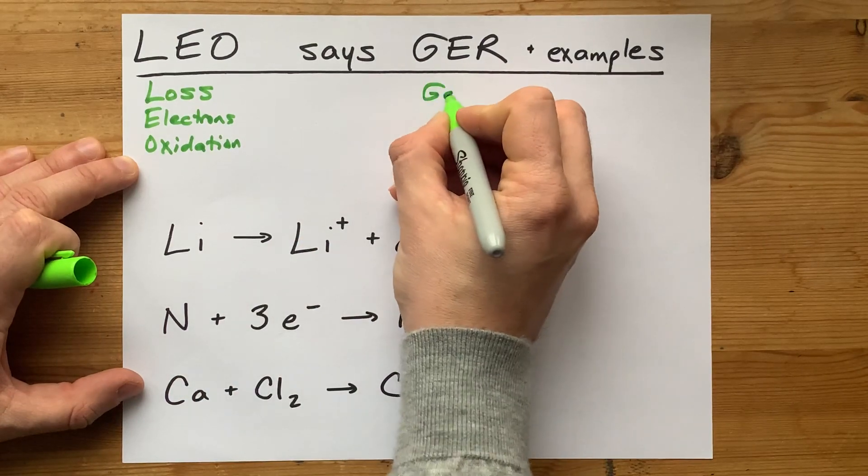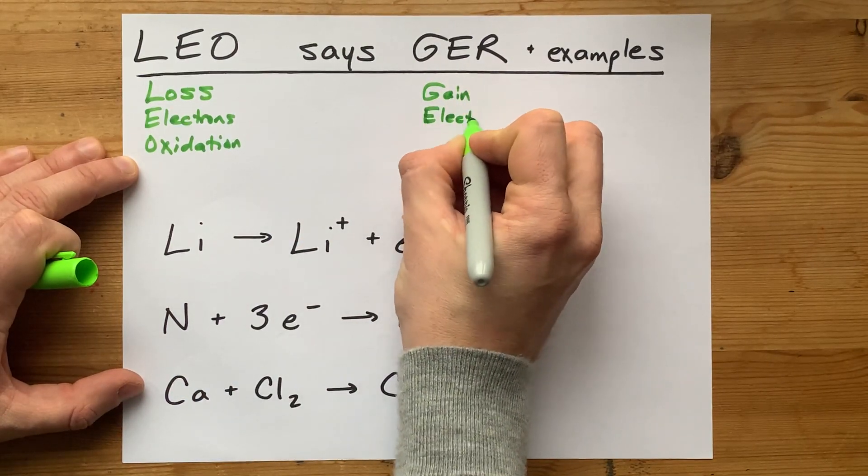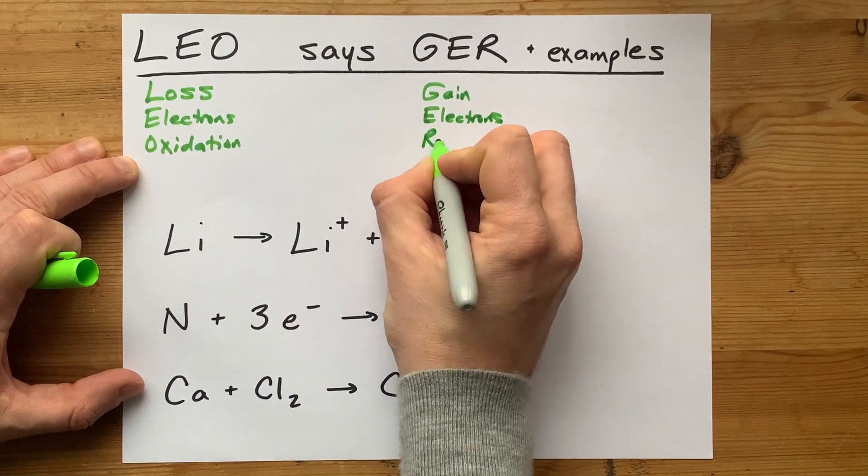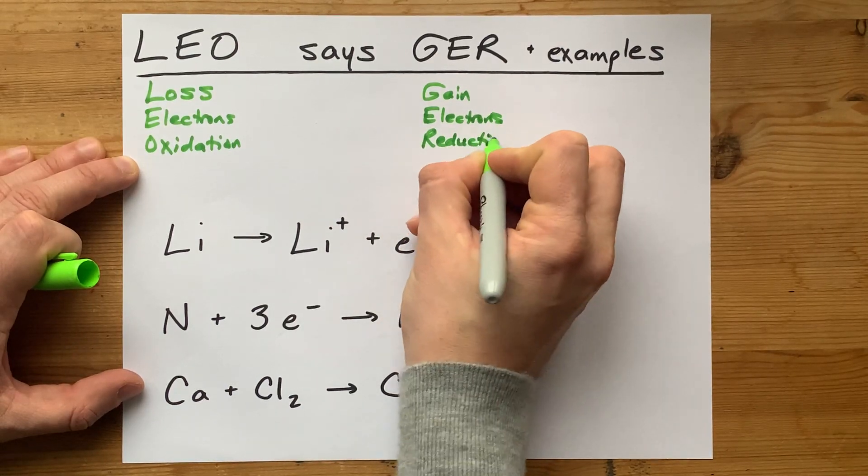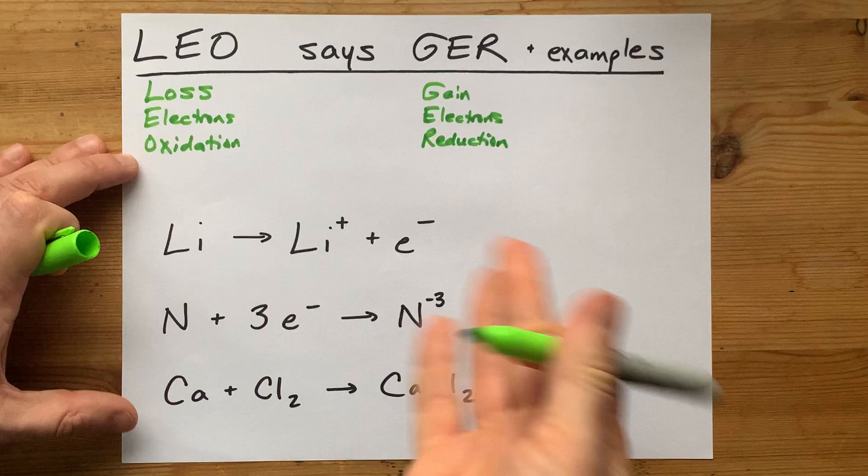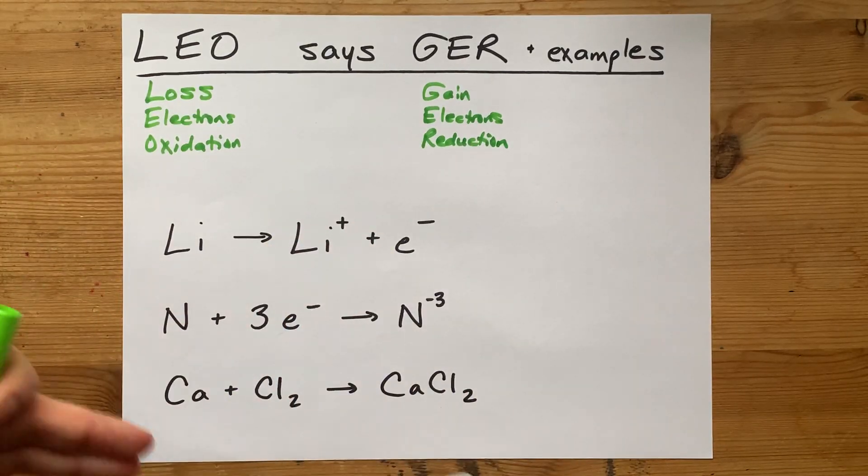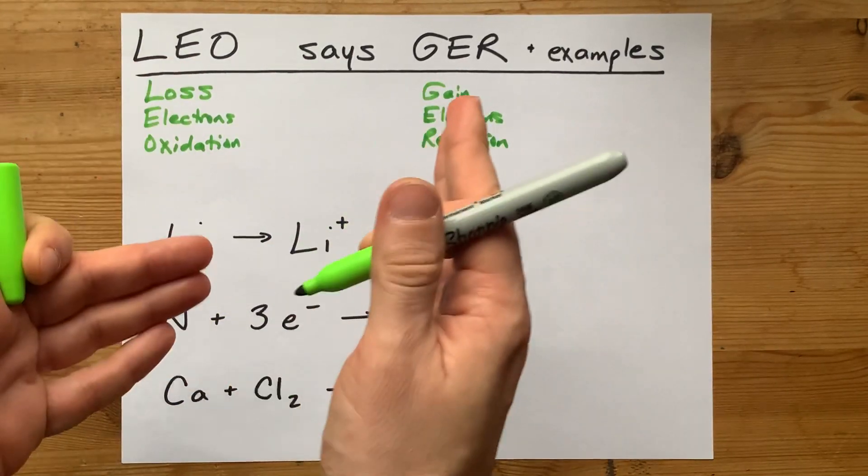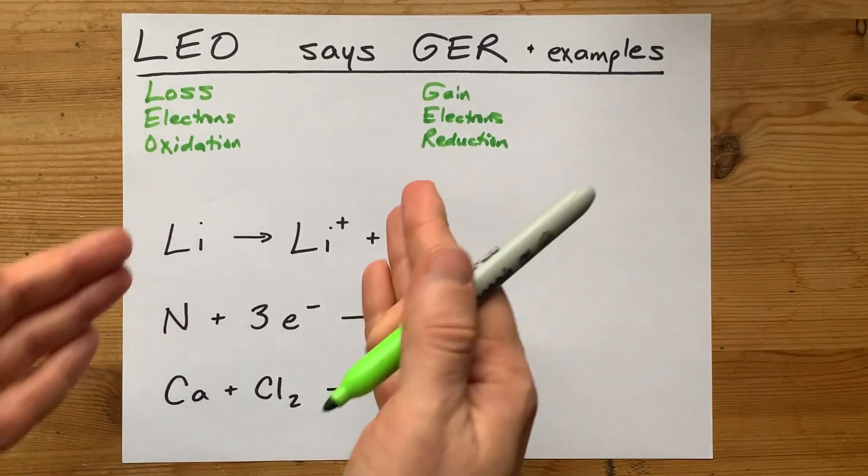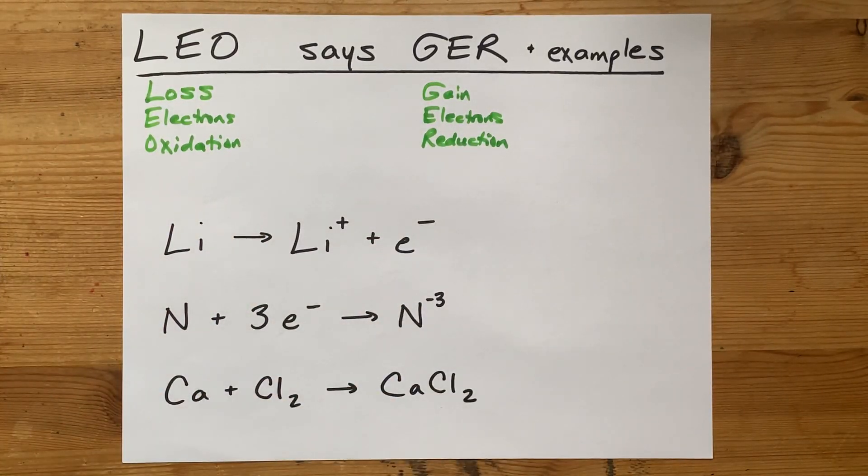And similarly, a gain of electrons is a reduction. The point here is that if you see a reaction or half reaction and you can figure out if electrons are being gained or lost, you can also identify it as being oxidation or reduction.